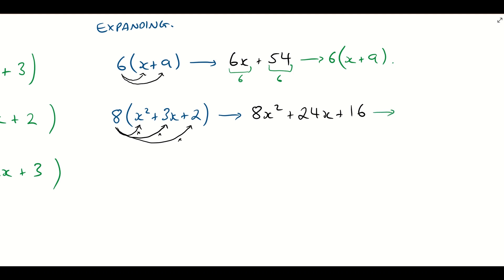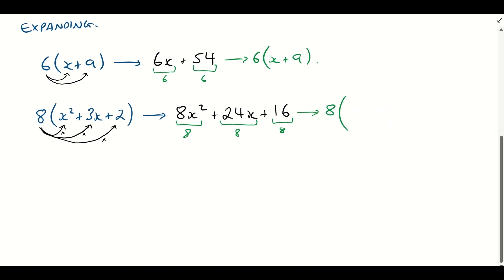We could check this is correct by factorizing back to what we started with. We look for a common factor amongst 8x², 24x, and 16. You could halve them all and go for 2, but you could go higher — the highest common factor here is 8. So dividing all of these by 8: we have 8 out the front, then x² plus 24 divided by 8 is 3, so 3x, plus 16 divided by 8 is 2. And that's exactly what we started with.